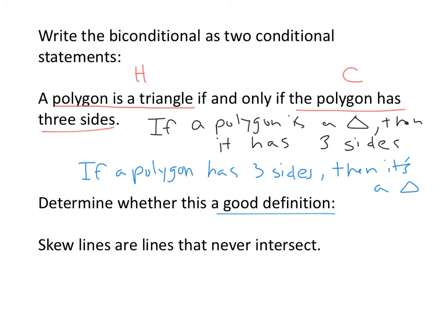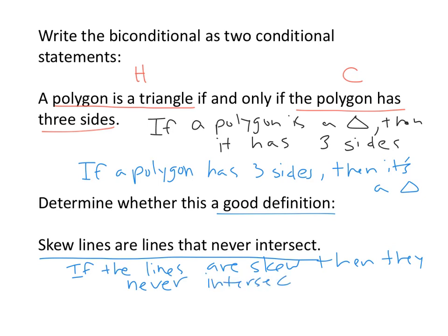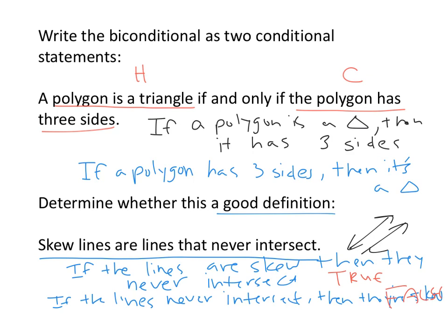And the last one, determine whether it's a good definition. You should be able to write it as a biconditional. Skew lines are lines that never intersect. If the lines are skew, then they never intersect. That's true. Now I'm going to reverse it. If the lines never intersect, then they're skew. Is that true? Can you think of lines that never intersect that are not skew? That would be the counter example. This is actually false. Because parallel lines never intersect. So this definition is not reversible. So it's not a good definition, because you can't write it as a biconditional.